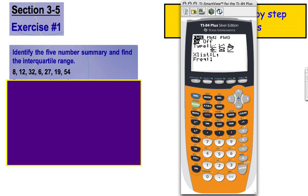At this point, this is where we're going to go and fix our window. So instead of going to the window button, we're going to go to the zoom button. So we're going to go zoom, and we're going to go down to number 9. Because what number 9 does for us is it takes, and it does what's called a zoom stat. So a zoom stat means it's going to zoom in on the numbers that we have in our data set. So we press enter, and there we go. We've got our box and whisker plot.